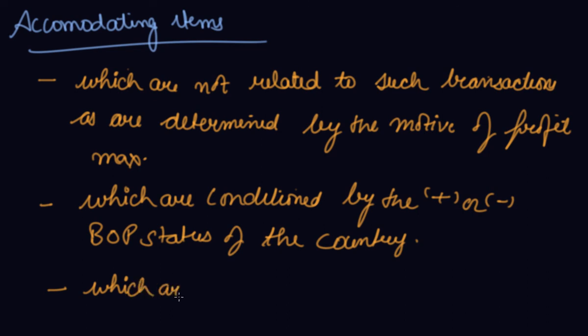Which are meant to establish balance of payment identity, means you do this so that your balance of payment accounts have some kind of identity in the rest of the world. So this was your difference between the autonomous and the accommodating items.